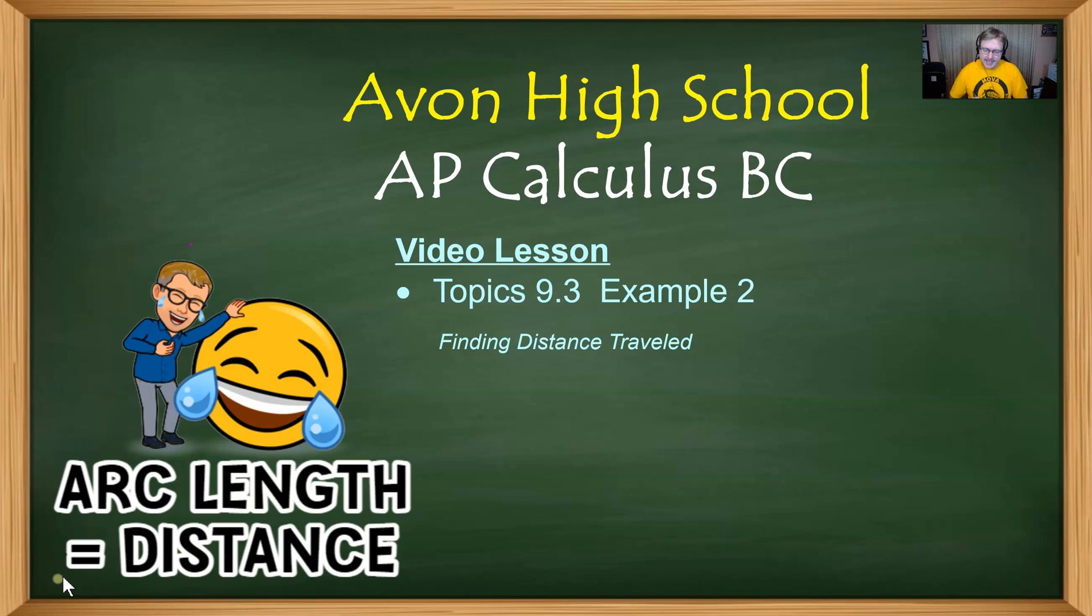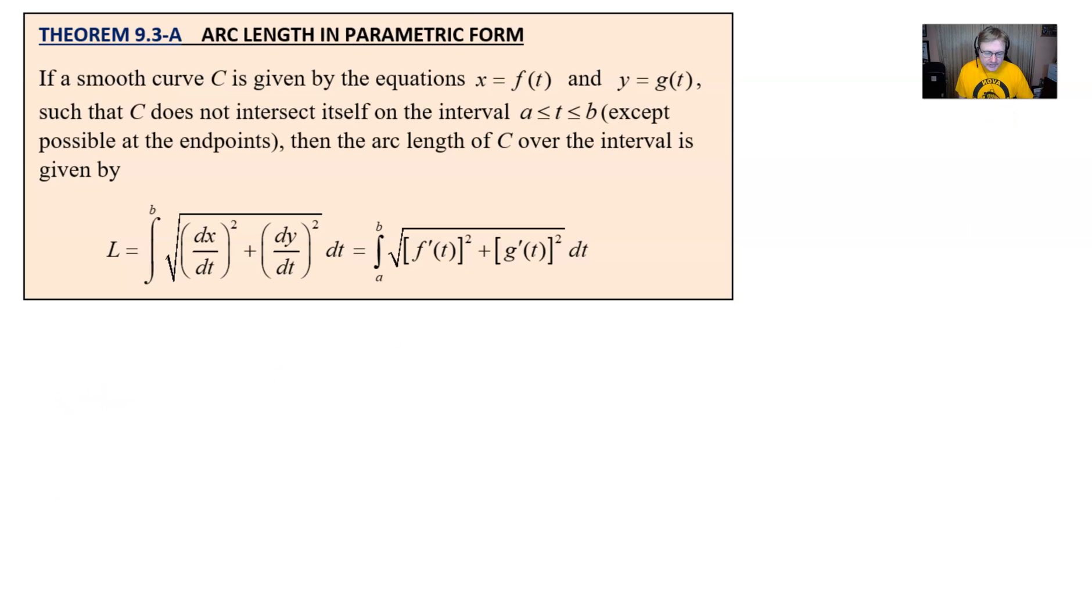Let's take a look at example number two. Now before we do that, I'm going to revisit a theorem from a previous video that we discussed about what the formula is for finding either arc length or in this case distance traveled. And that's just simply taking the square root of the sum of the squares of the derivatives of your x and your y equations and then integrating that result over the given t values that you're using in that particular problem. So it has a nice little kind of flow to it. If you didn't get a chance to watch the previous video, I outlined how this formula evolves from the arc length formula from rectangular.